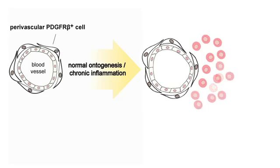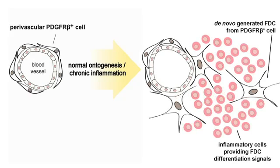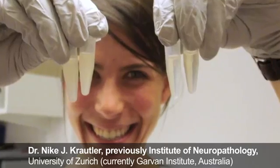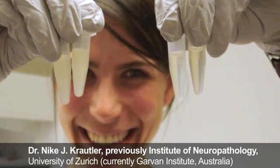We are left with a second possibility: that follicular dendritic cells may actually be stromal, sessile, immobile cells. But if that were the case, they must derive from ubiquitous precursors, because follicular dendritic cells can arise everywhere in the body. So we tackled this question, and the way we have done it was that several years ago, we embarked on an endeavor to acquire additional markers for follicular dendritic cells.